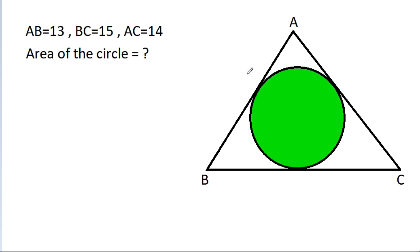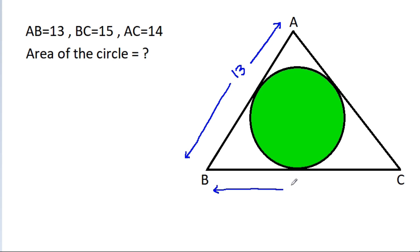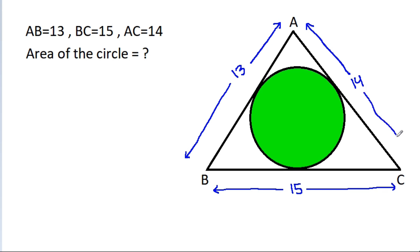In this video, we have been given that AB is 13, BC is 15, and AC is 14. Then we have to find the area of the circle.